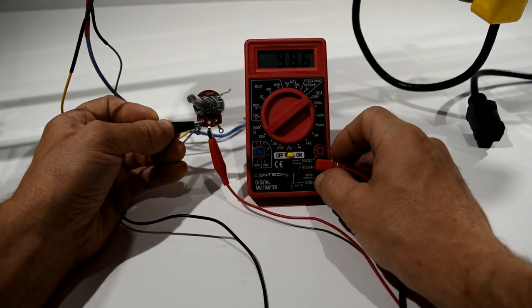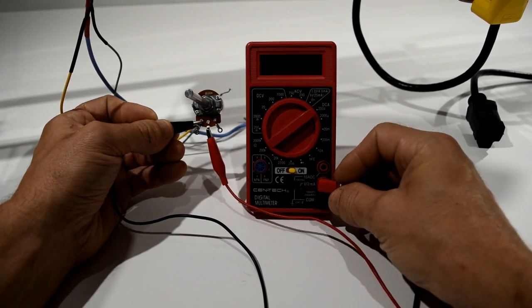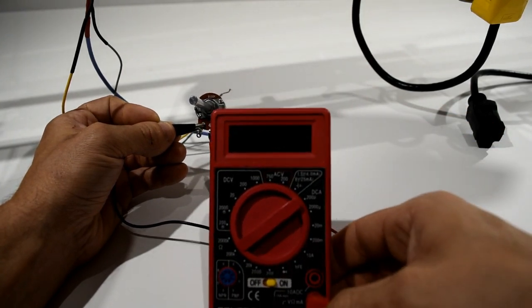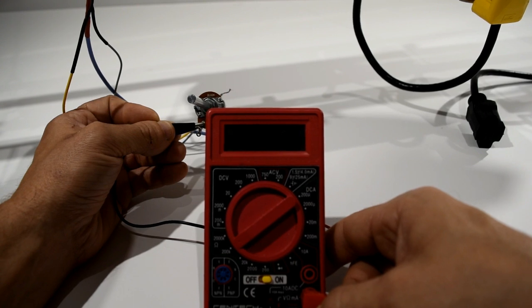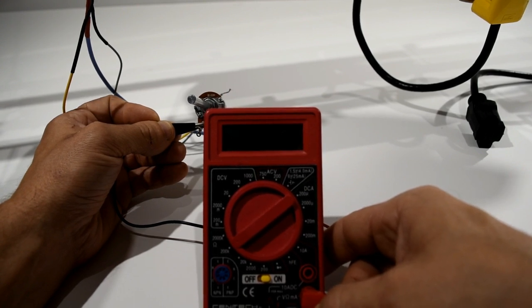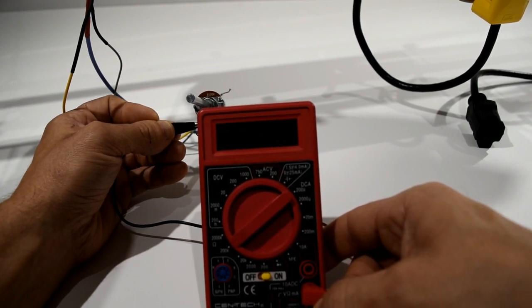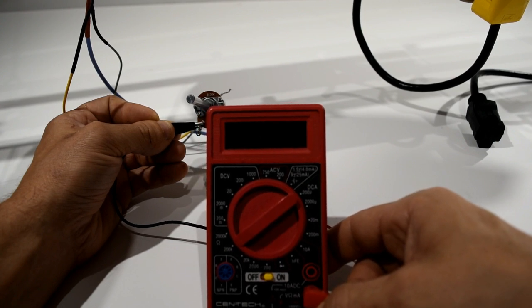but testing this 100k potentiometer, I'm only getting 98.6k, which means that the driver is only going to run 98.6% of its maximum. So that is when I talked about the 10k resistor, that's increasing the potentiometer from a 100k, basically to a 110k.